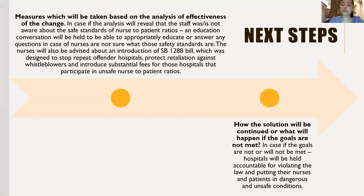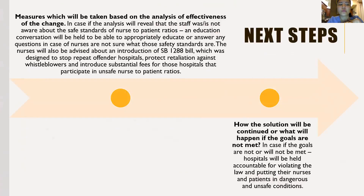Next steps: measures will be taken based on analysis of the effectiveness of the change. If analysis reveals that staff are not aware of the safe standard of nurse-to-patient ratios, an educational conversation will be held to appropriately educate and answer questions. Nurses will also be advised about the introduction of SD1288, a bill designed to stop repeat-offending hospitals, protect against retaliation against whistleblowers, and impose substantial fees on hospitals that participate in unsafe nurse-to-patient ratios. If goals are not met, hospitals will be held accountable for violating the law and putting nurses and patients in dangerous and unsafe conditions.